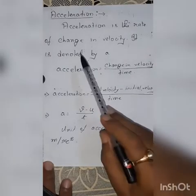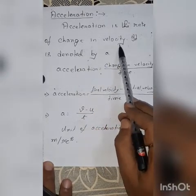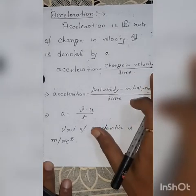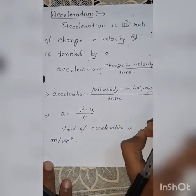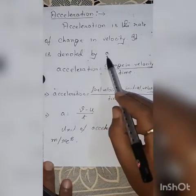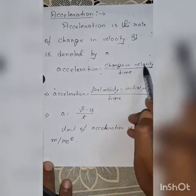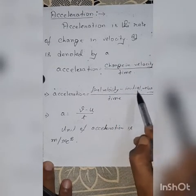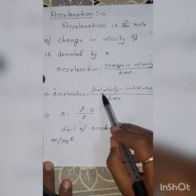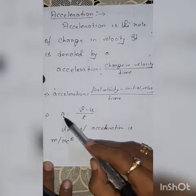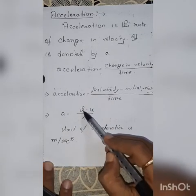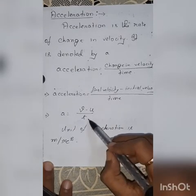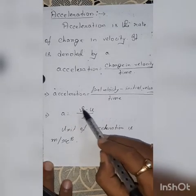Acceleration is the rate of change in velocity. That means with the help of acceleration, we can calculate the change in velocity that takes place in a particular period of time. It is denoted by A. Acceleration is change in velocity divided by time. In order to find the change in velocity, we need to subtract initial velocity from final velocity. Final velocity is denoted by V, initial velocity is denoted by U, and time is denoted by T. So, A equals V minus U by T.